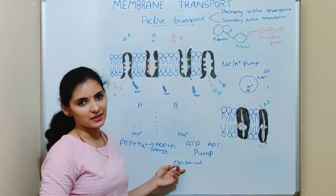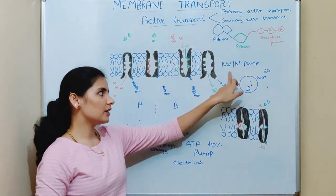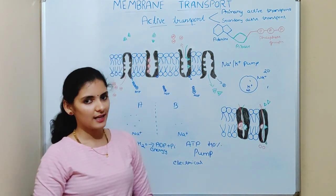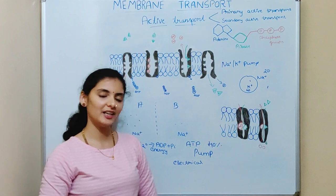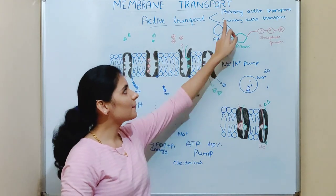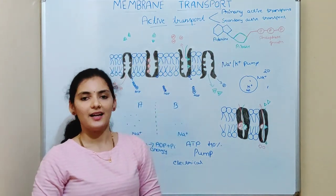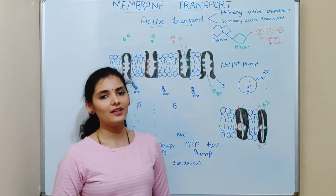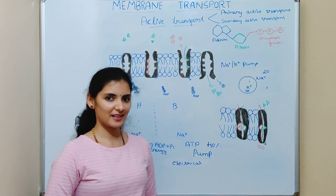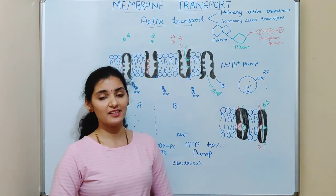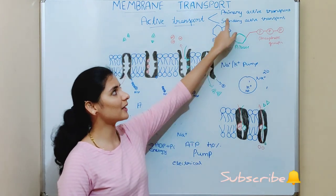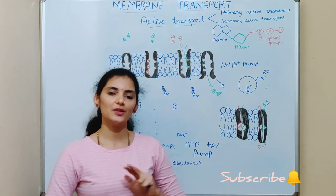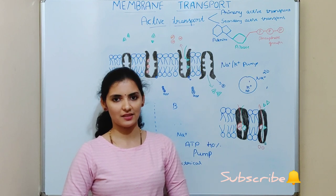This results in the establishment of a negative charge inside compared to outside — which is the electrical gradient. So the sodium-potassium pump also establishes a voltage or electrical gradient. That is all about primary active transport. The next type is secondary active transport, which uses the electrochemical gradient established by primary active transport as a source of energy for moving molecules against the concentration gradient.